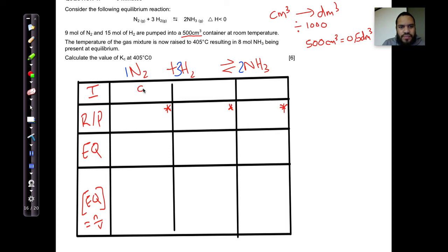So let's fill in what was given. This was given as 9. This was given as 15. And this, over here, we are told that there is ammonia of 8 moles. So, when we started this reaction, we didn't have any of that.